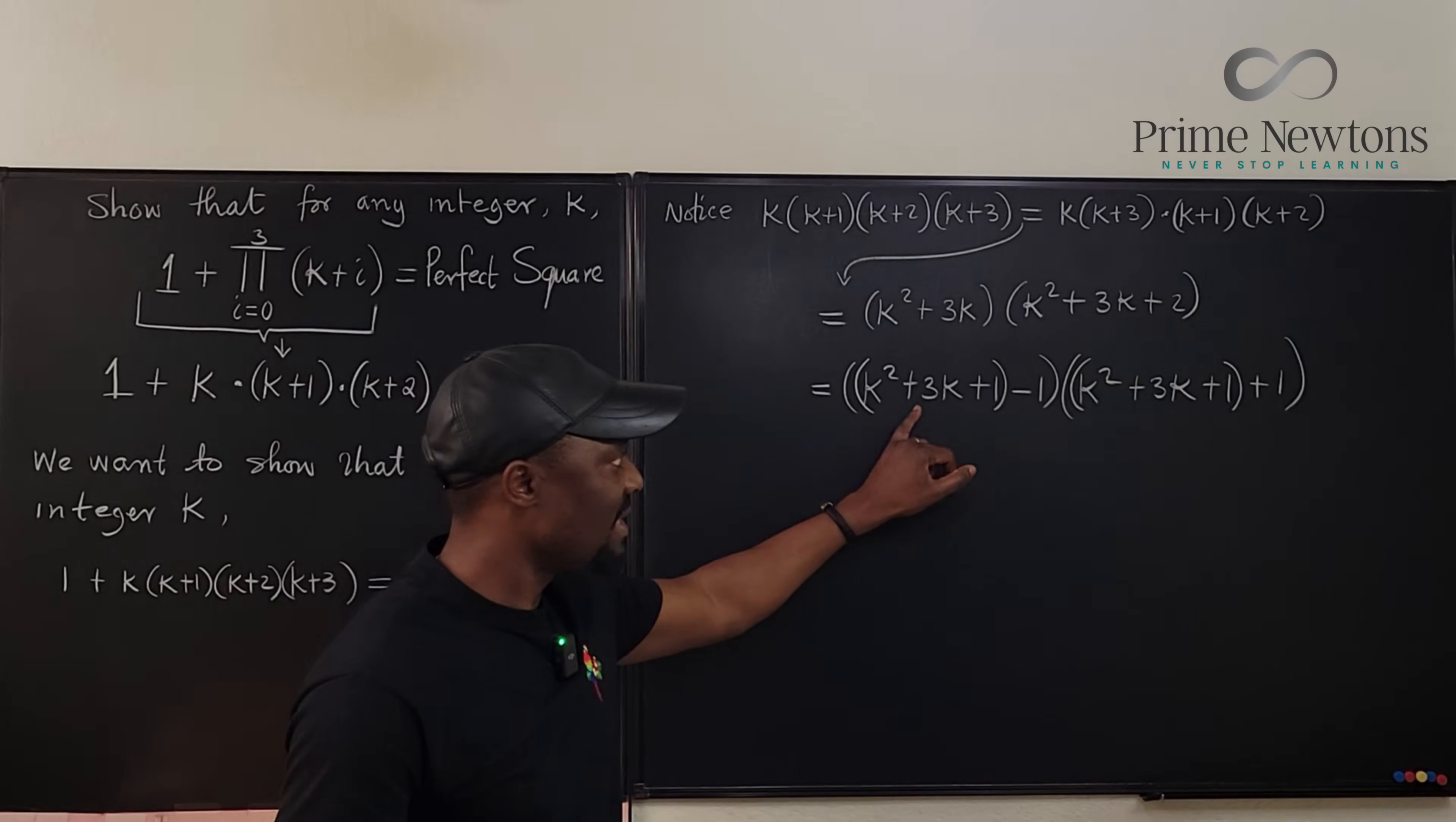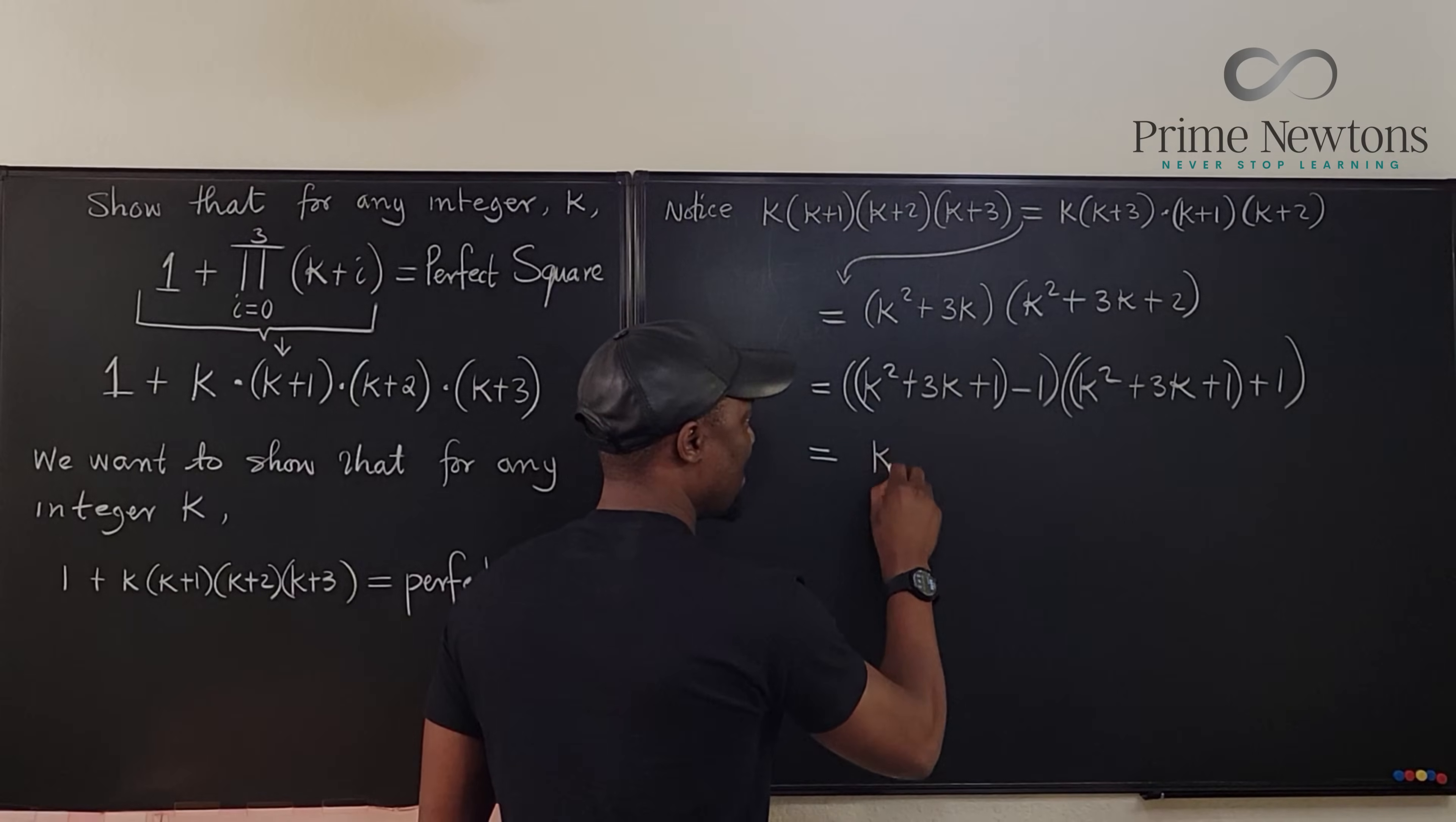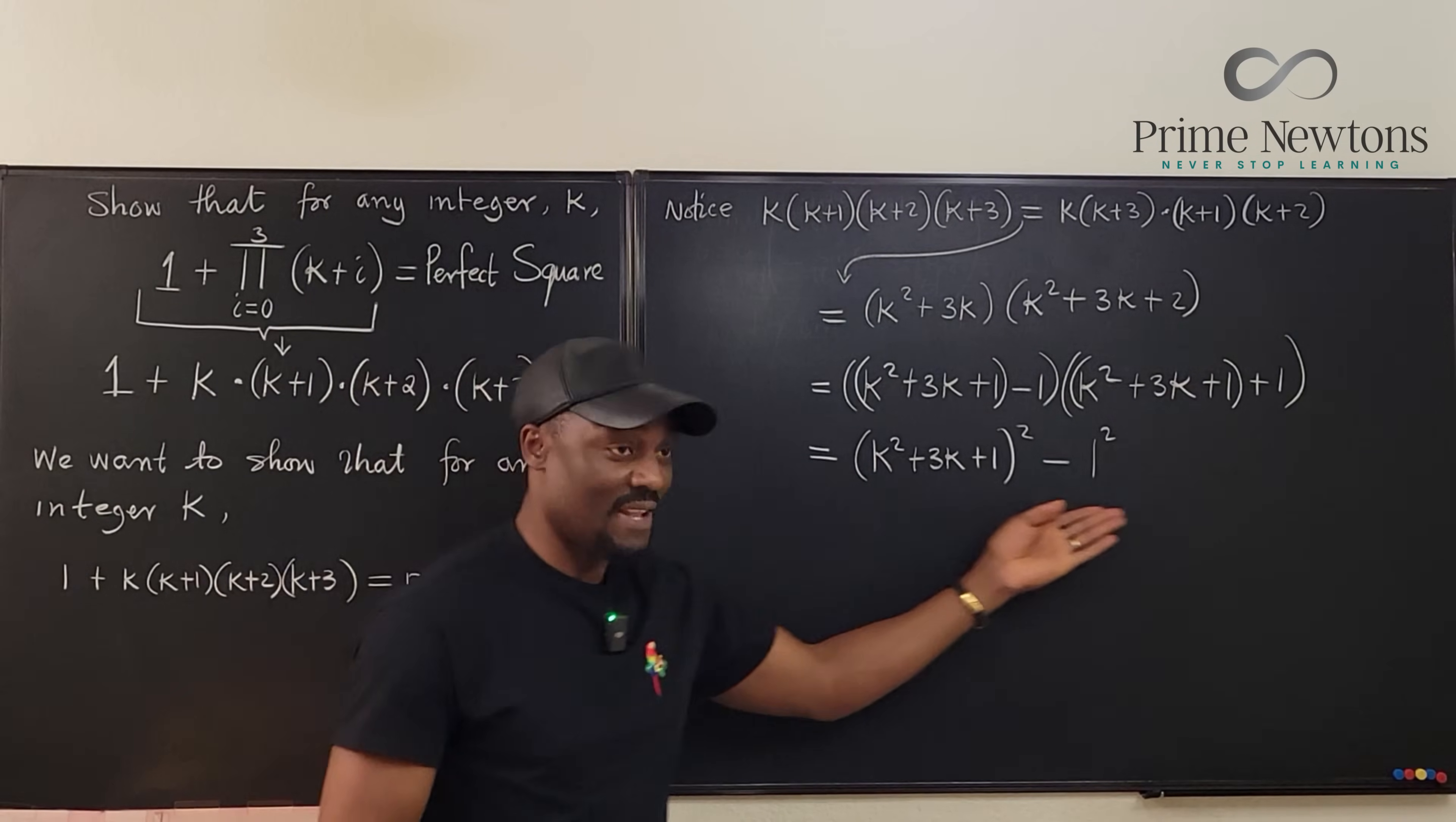So this is the factoring of a perfect square. I mean, of the difference of two squares. This is equal to k squared plus three k plus one squared minus one squared. That is what I was able to generate from this product.